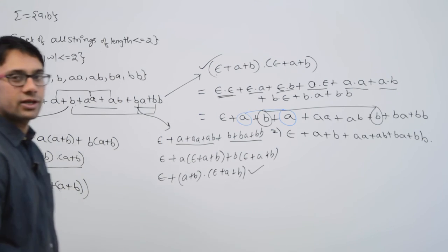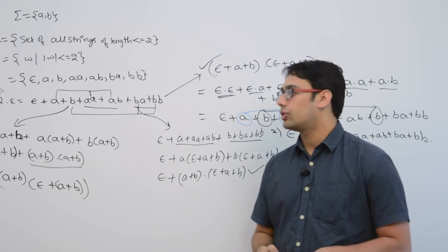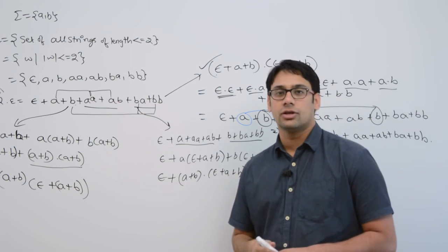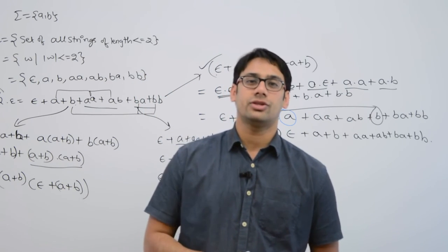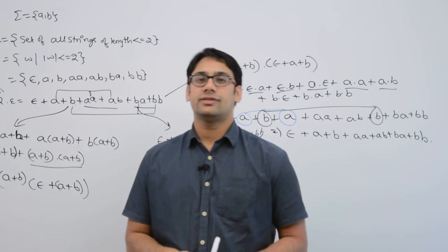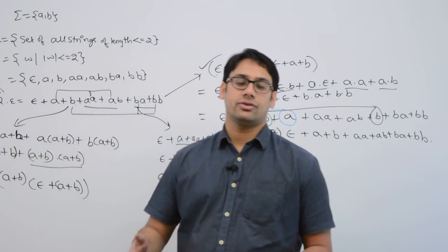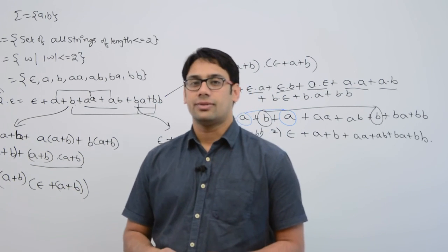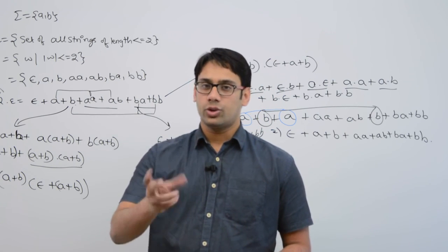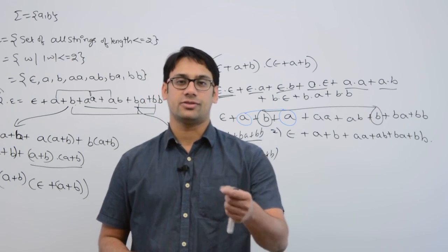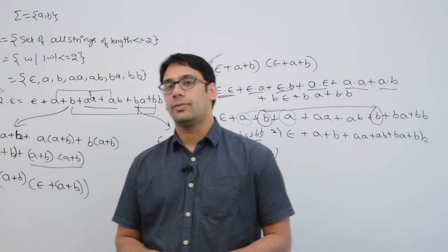So for a given language it is not necessary that we have only one single representation — we can have more than one representations for the strings of that particular language. In GATE, UGC NET, DRDO, ISRO, and similar examinations, if you get questions on regular expressions they will twist the regular expressions in such a way that sometimes you will not be able to understand what language is represented by those expressions.